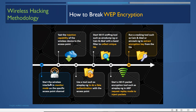The first step to crack WEP is to start the wireless interface in monitor mode on the specific access point channel. For that, the attacker first disconnects the interface from all other networks, then configures it to work in monitor mode. Next, the attacker tests the injection capability of the wireless device to the access point.